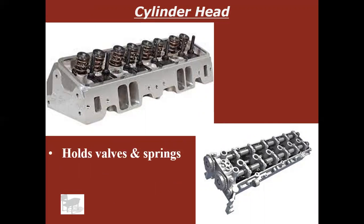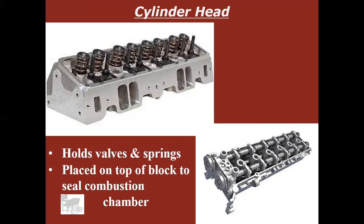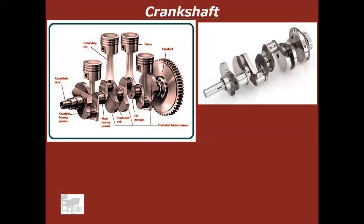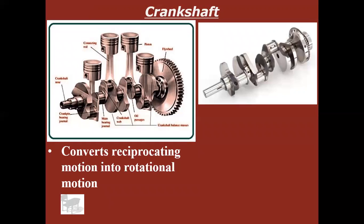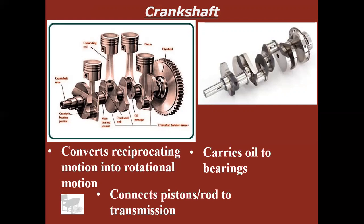The cylinder head is going to hold your valves, valve springs, and keepers. Sometimes it's going to hold camshafts, and it is bolted to the top of the engine block. It's going to seal the combustion chamber and allow air and fuel in and exhaust gases out. The crankshaft converts that reciprocating motion of the pistons and connecting rods into rotational motion so that it can connect out to the transmission and eventually spin your wheels. It also carries oil around the engine — oil is pumped in through the main bearings and circulated out to the rod bearings and rod journals.